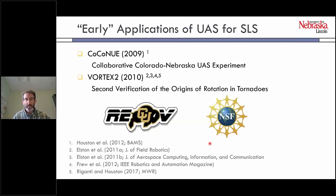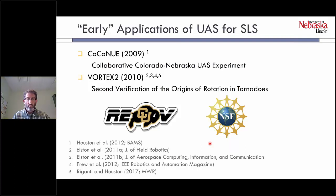Early applications of UAS for severe local storms — biased towards work we've done, but in fairness, me and my collaborators have been on the leading edge. Back in 2009, we executed the COCONOO project, a collaborative Colorado-Nebraska UAS experiment. In 2010, we participated in Vortex 2, the second Verification of the Origins of Rotation in Tornadoes. Both were funded by the National Science Foundation, and the Research and Engineering Center for Unoccupied Vehicles at CU was also heavily involved.